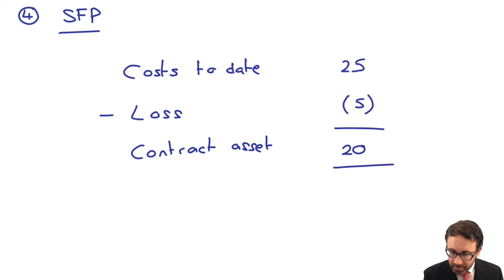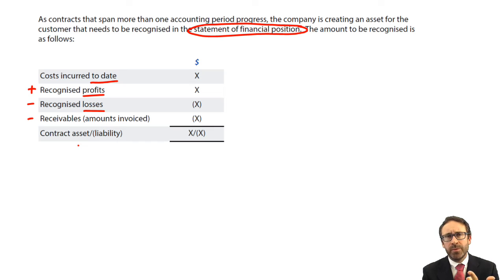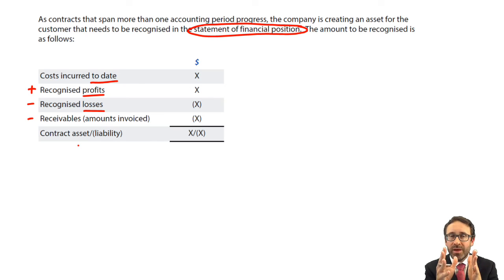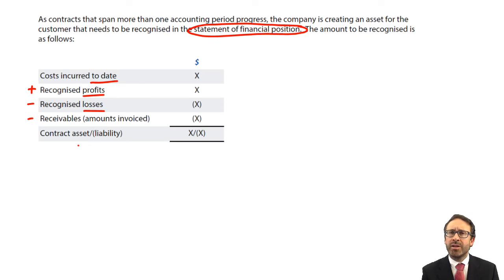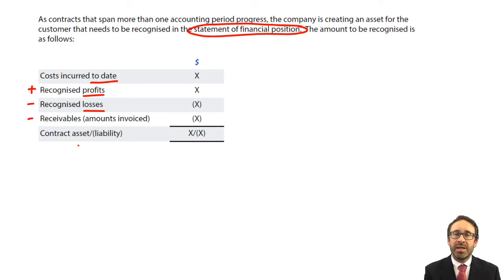Excellent — so we've now looked at this four-stage process: step one is working out whether the contract is profitable or loss-making; step two is looking at the stage of completion; step three is looking at the figures on the statement of profit or loss for that year; and step four — the fourth and final step — is the statement of financial position, which looks cumulatively from when you started constructing the asset up until today's date, spanning at least one accounting period.